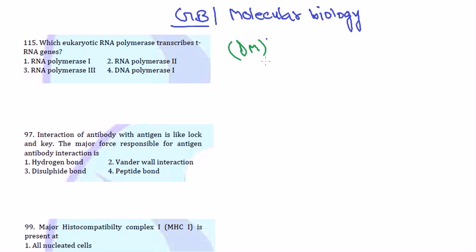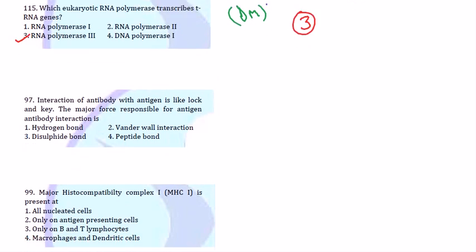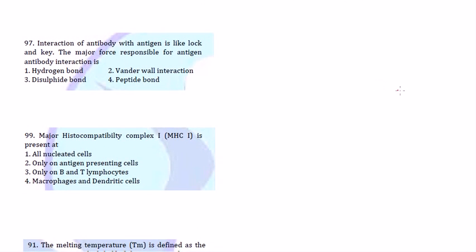RNA polymerase III transcribes tRNA genes, so option 3 is the correct option — not the others. Direct questions are always dangerous: if you know the answer, great; if you don't, you need to skip away.